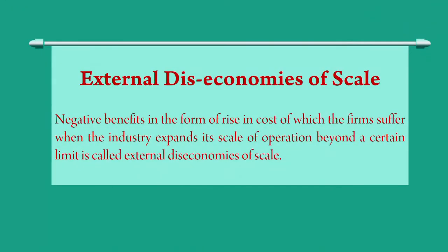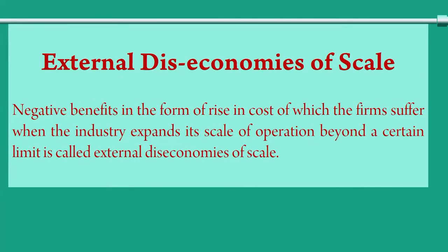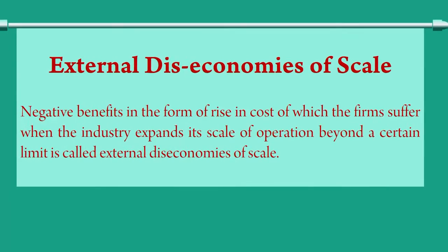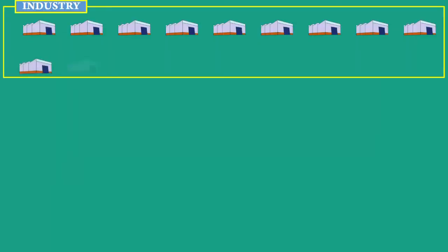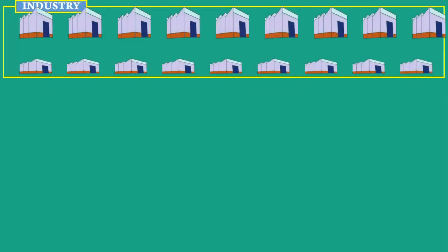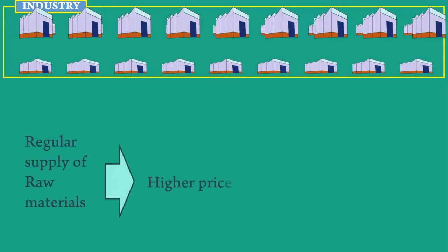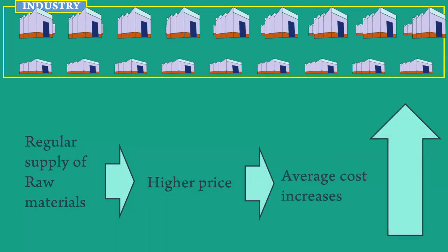Negative benefits in the form of a rise in cost, which the firms suffer when the industry expands its scale of operation beyond a certain limit, is called external diseconomies of scale. As the number of firms in the industry increases, the existing firms will expand their plant size. There will be heavy competition among firms in buying inputs, and in order to ensure regular supply of raw materials, they start offering higher prices. This, in turn, will increase the cost enormously.